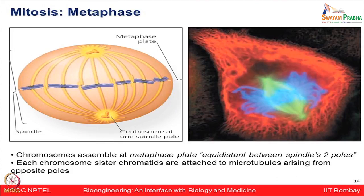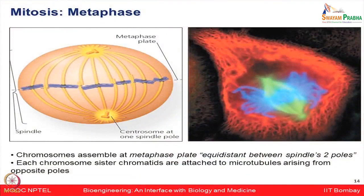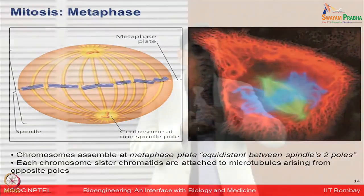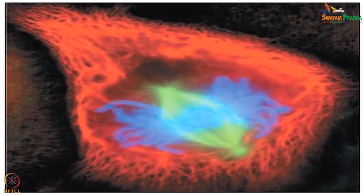In metaphase, the chromosomes get assembled at the metaphase plate, which is equidistant between the two spindle poles. Each chromosome's sister chromatids are attached to microtubules arising from opposite poles. This can be seen clearly in microscopic images.